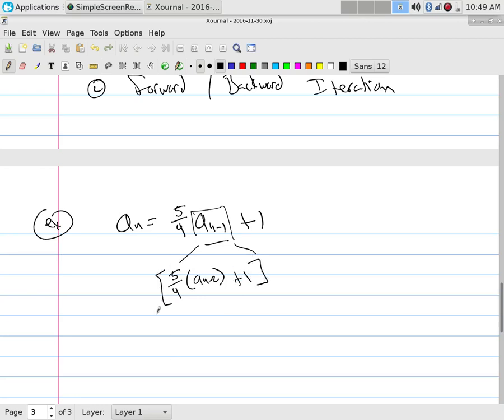If I put that in there, it's 5/4 times that, so the 5/4 would distribute through. That's (5/4)^2 times a_(n-2) plus the 5/4 times this one, which is 5/4, then plus 1. All I did was take this and plug it in for a_(n-1) and take this 5/4 and distribute it.